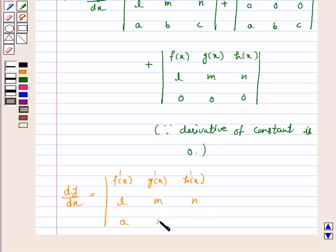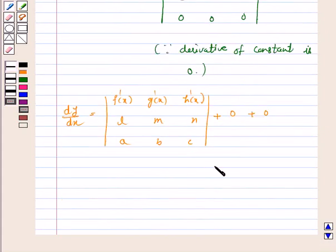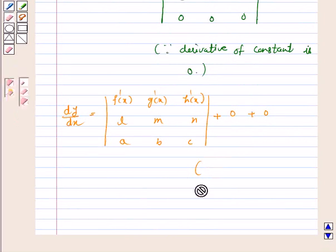Plus 0 plus 0. By expansion of determinants, we get this because when we will expand, we will get 0.